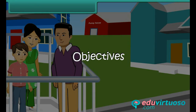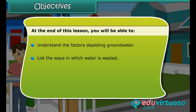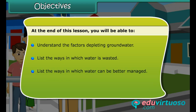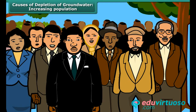At the end of this lesson, you will be able to: understand the factors depleting ground water, list the ways in which water is wasted, list the ways in which water can be better managed, and understand the effects of water scarcity on life forms.